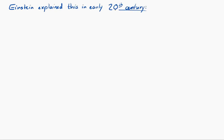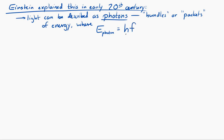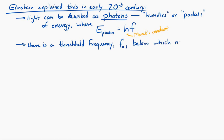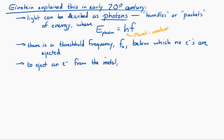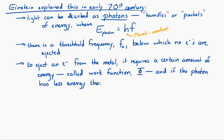Einstein explained it by saying that light can be described as photons. These photons are bundles or packages of energy, where the energy of the photon is equal to hf, where h is Planck's constant and f is the frequency of light. He also said there is a threshold frequency f₀, and below that threshold frequency, no electrons are ejected from the metal. To eject an electron from the metal requires a certain amount of energy, called the work function, represented by the capital letter phi (φ). If the photon has less energy than the work function, the photon does not have enough energy to eject an electron.